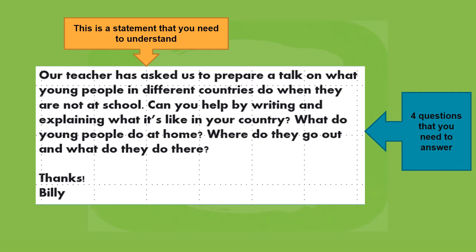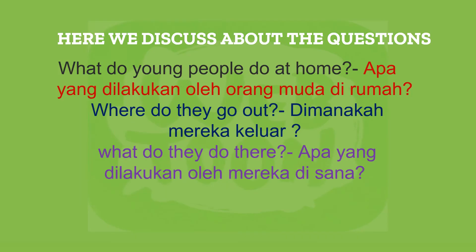There are four questions that you need to answer. Can you help by writing and explaining? Number one — you need to write and explain what it is like in your country. Question two: what do young people do at home? Question three: where do they go out? And question four: what do they do there? We have four questions that we need to answer. Let's discuss the questions one by one.